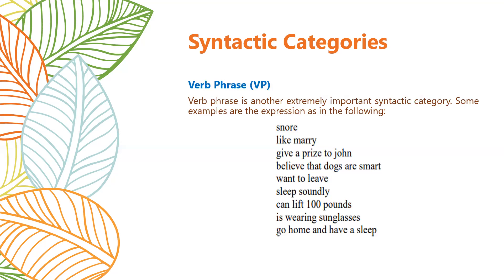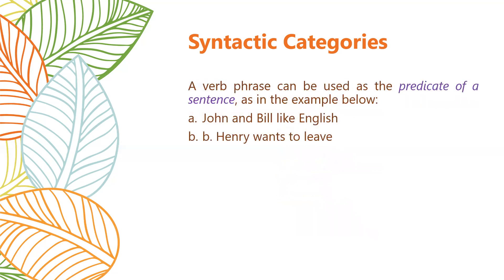A verb phrase starts with the verb, and after that you find other words. A verb phrase can be used as a predicate of a sentence — from the verb to the end of the sentence. For example: 'John and Bill like English' — 'John and Bill' is the compound subject, 'like English' is the predicate and verb phrase. 'Henry wants to leave' — 'Henry' is the subject, 'wants to leave' is the verb phrase predicate.